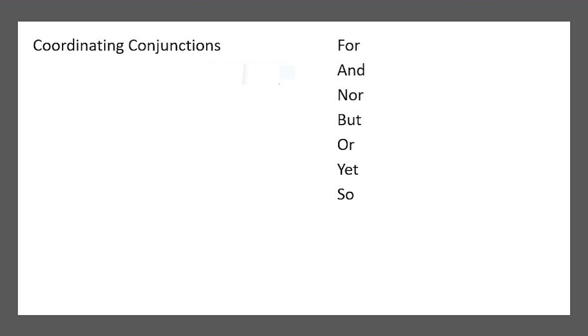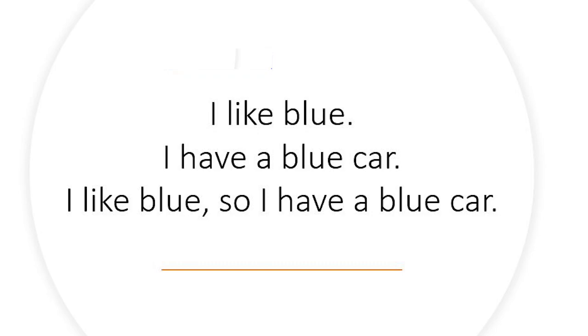An example sentence: I like blue, so I have a blue car. Another example: I have a cat, but she thinks she's a dog. That's an example of connecting two independent thoughts together. Just remember your coordinating conjunction and your comma.